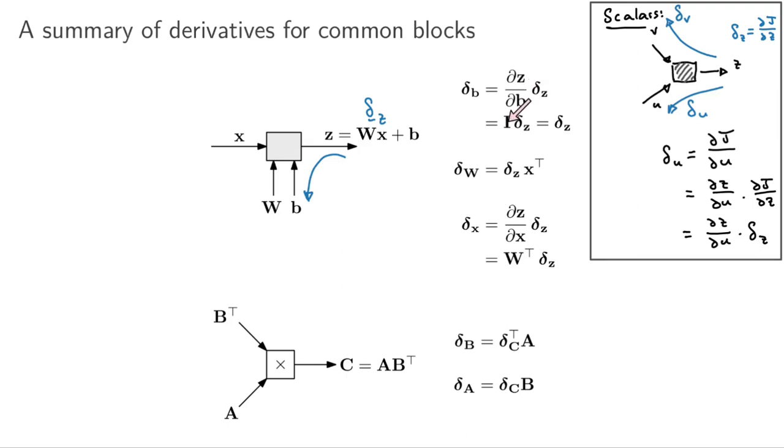In this case, it's pretty easy because the partial derivative of vector Z with respect to vector b is just the identity matrix, so this just turns out to be the same. You can pass those gradients straight through. Then we've got similar equations for backpropping through the matrix W.